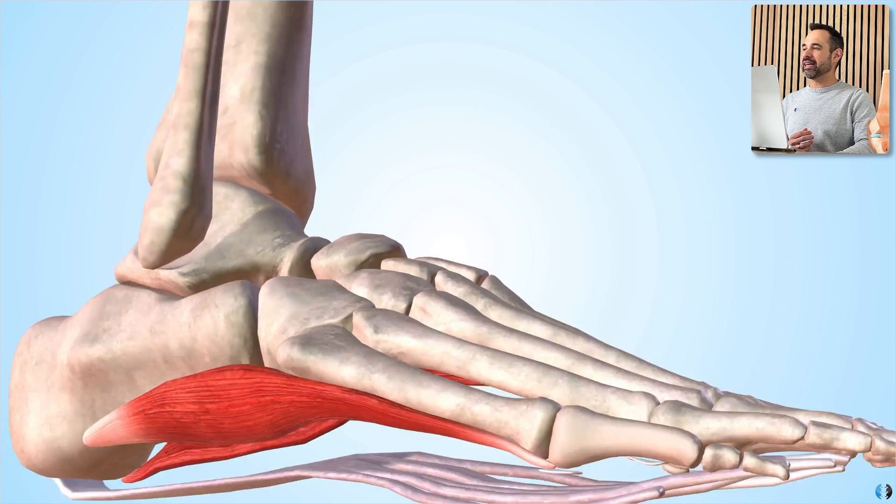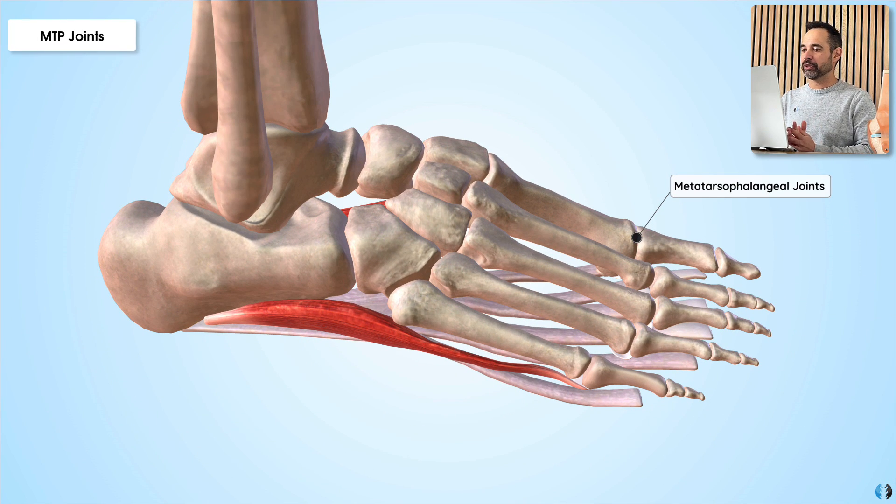So the next component to show you is the metatarsophalangeal joints themselves. These are the joints between the metatarsals of each digit and the proximal phalanx of each digit. Now, this is really important when we talk about extending the toes, which you'll see shortly.